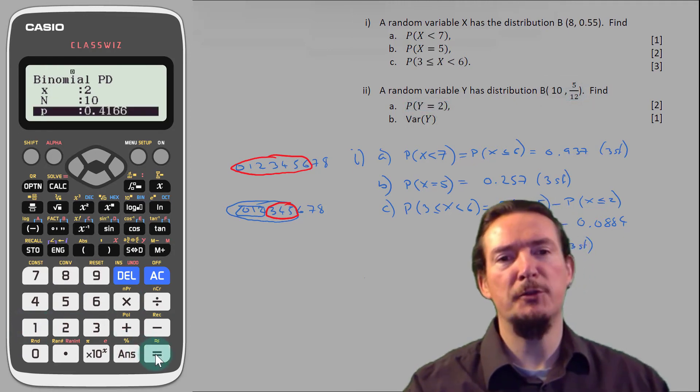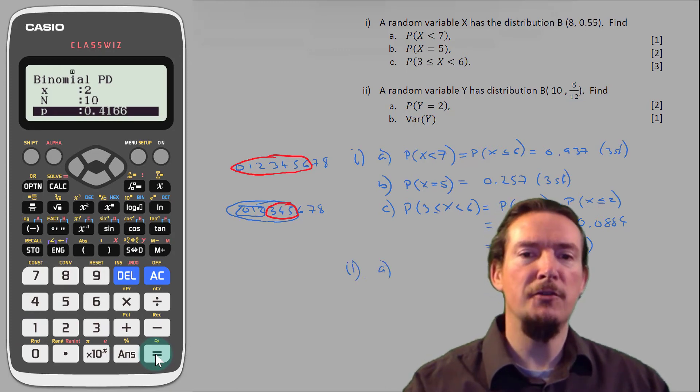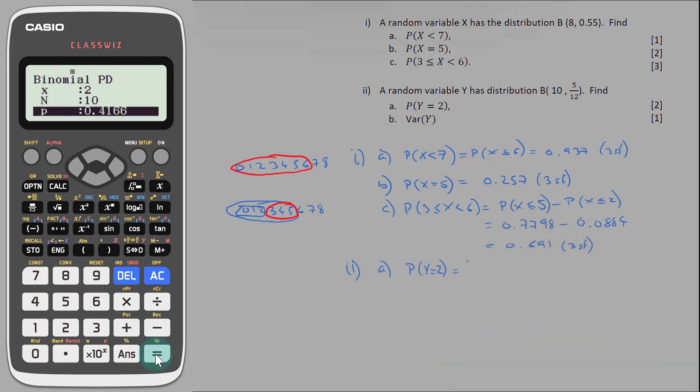Now the maths tables won't have 5 twelfths, which means that without your graphical calculator you would have to do this one by using combinations, so 10 choose 2, p to the power 2, q to the power 8. But here we can just tap the parameters and let the calculator work it out and we write it down. So 0.105 to three significant figures.